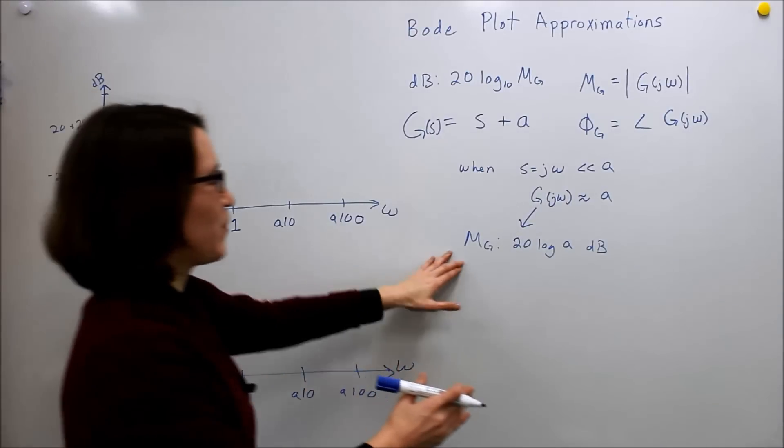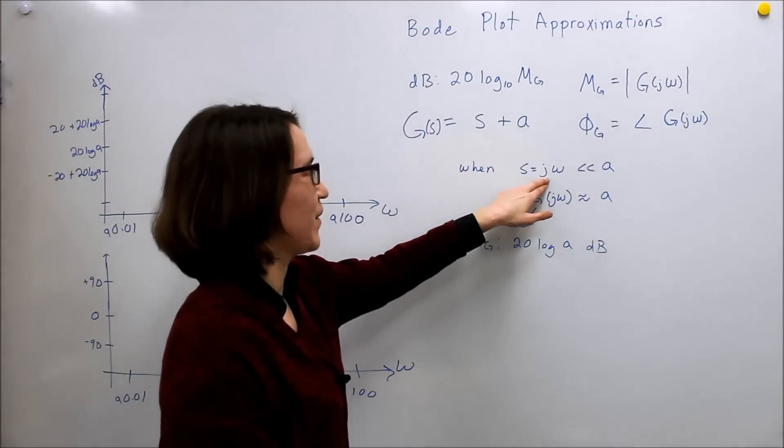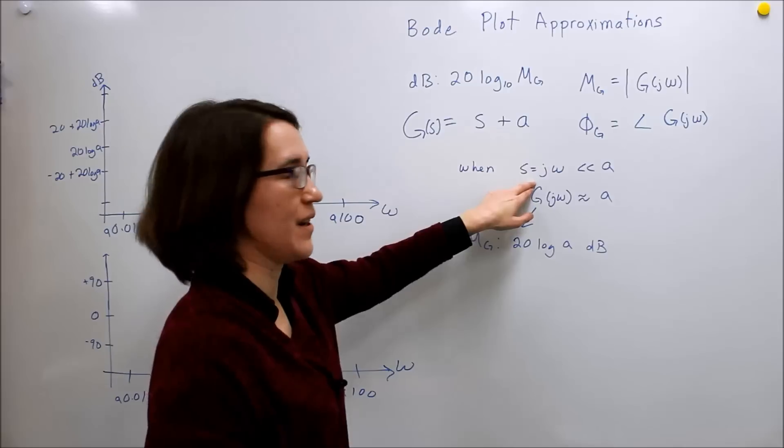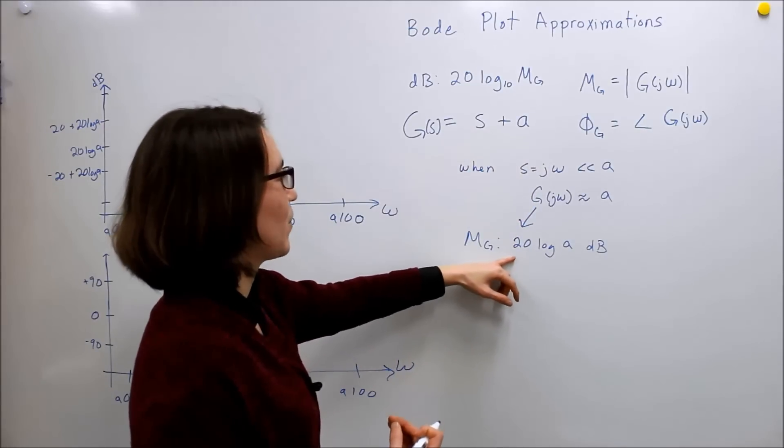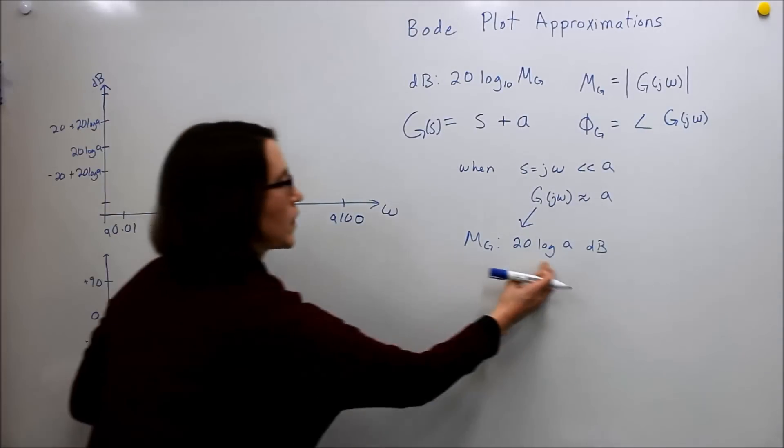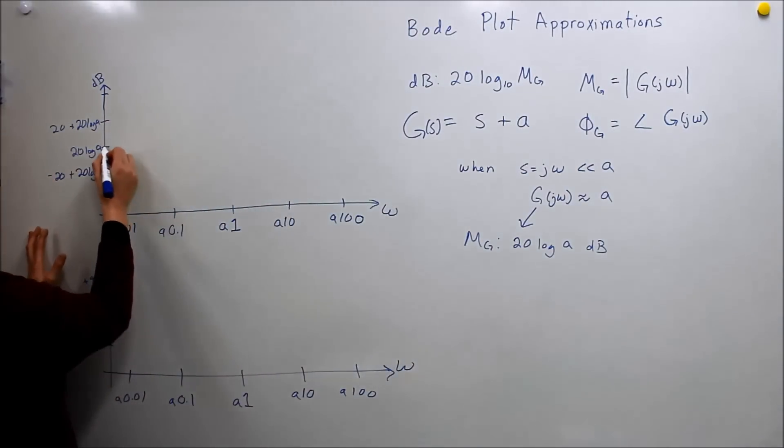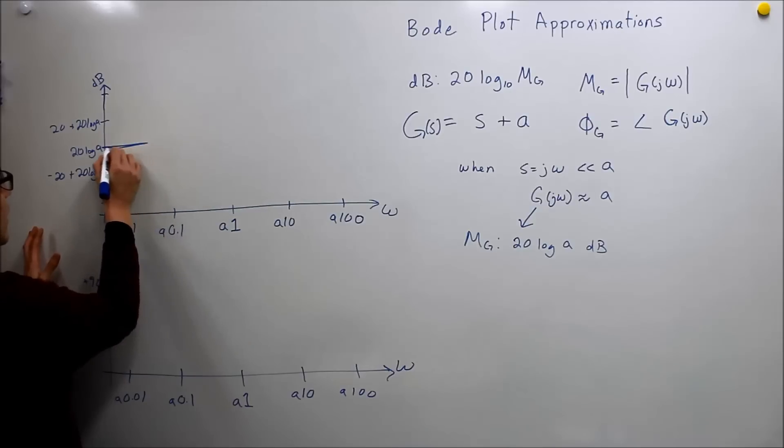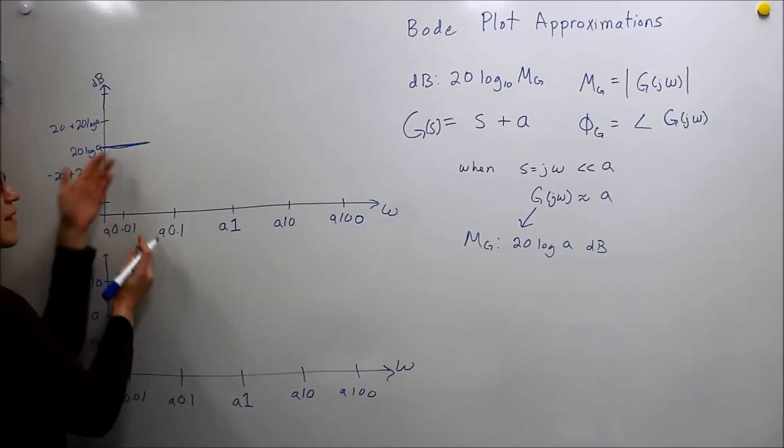At the beginning, at low values of j omega, small values of j omega, then we're going to essentially have our magnitude be equal to 20 log a. So that's coming up over here. So we know that in the low side, we're going to start at this point.